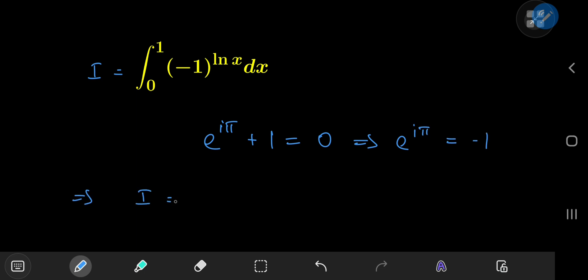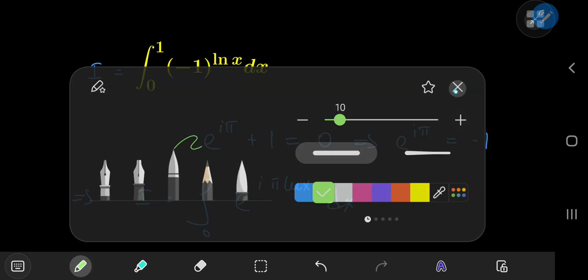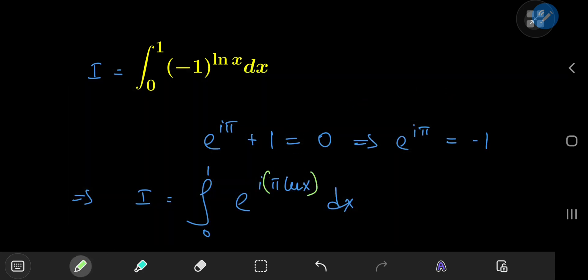So this implies that we can write i as the integral from 0 to 1 of e to the i pi times log x dx. And how exactly does this help our cause?